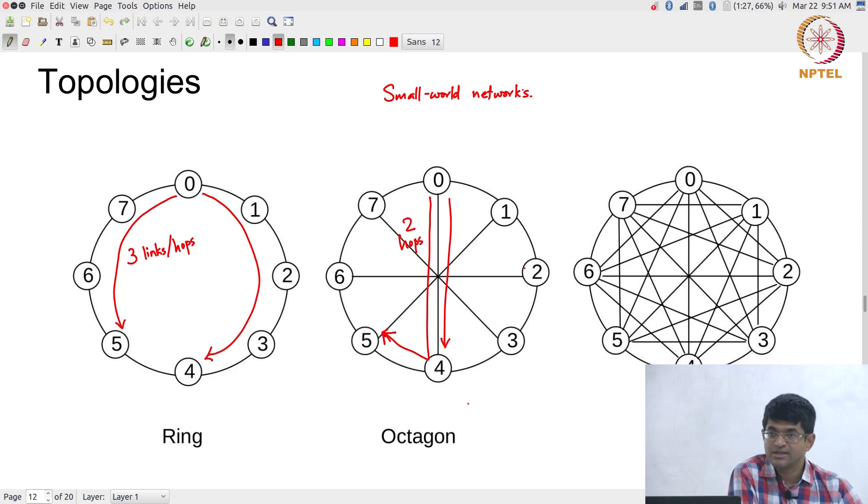The crossbar is the opposite extreme, it is the smallest possible world. Everybody is directly connected to everyone else. But as you can see the problem with the crossbar is precisely that everybody is directly connected to everybody else, just too many links. Routing a crossbar can be a nightmare.